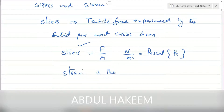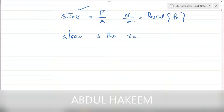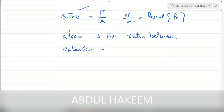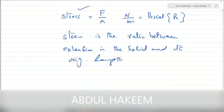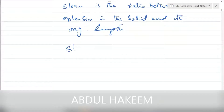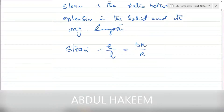And strain is the ratio between extension in the solid and its original length. So strain equals extension divided by length. Sometimes it is also written as delta R over R, meaning change in resistance divided by resistance. It is dimensionless — it has no unit.